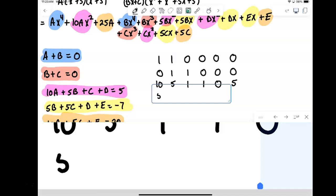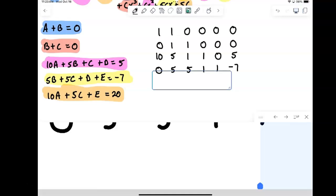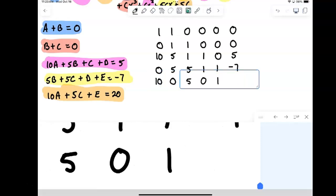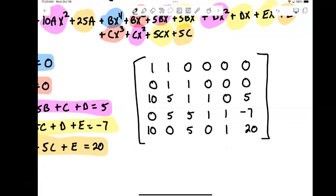0, 5, 5, 1, 1, minus 7. And finally in the last row: 10, 0, 5, 0, 1, 20. So there's our big old system. And I'd ask you to pause the video for a moment and try to put this into its matrix. This matrix is going to require five rows and six columns. So go ahead into your graphic calculator and take a moment and do that.